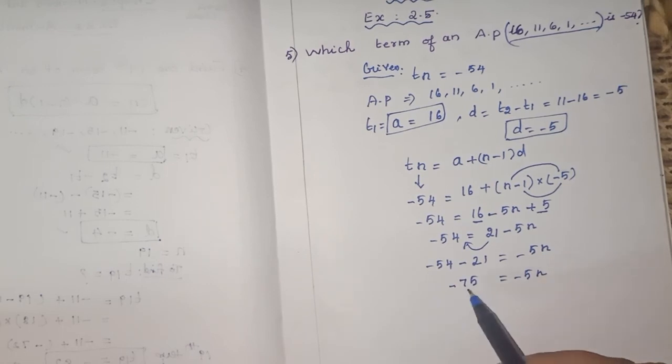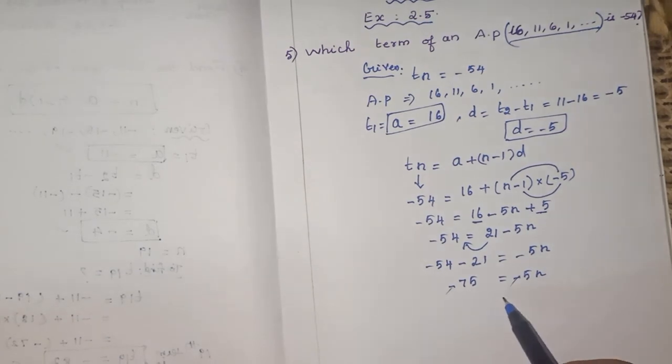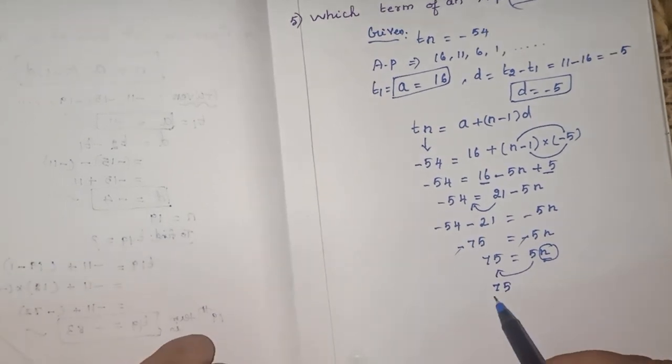Both the sides, you have, it is common, this minus symbol, you can cancel it now. So now 75 equals 5n. So n is what we want n. So n equals what? This 5 goes here: 75 divided by 5.